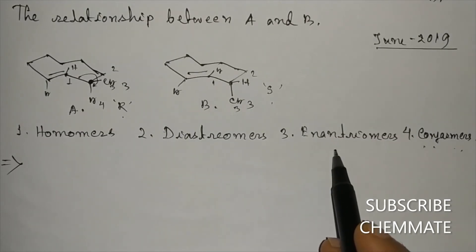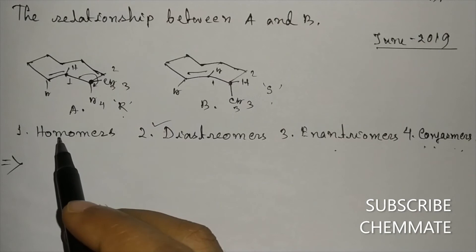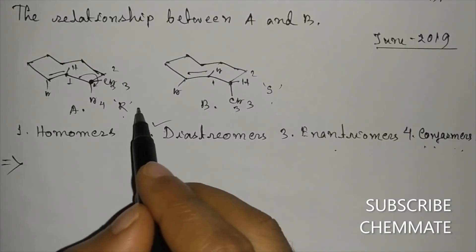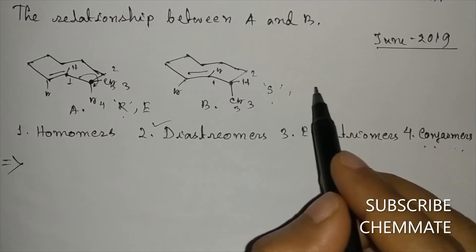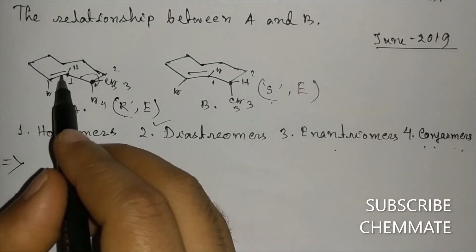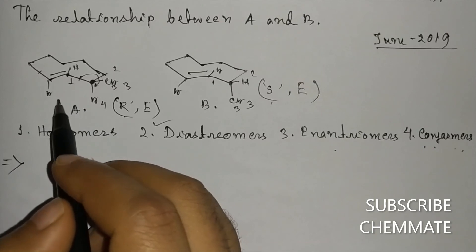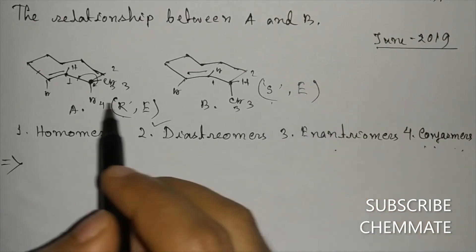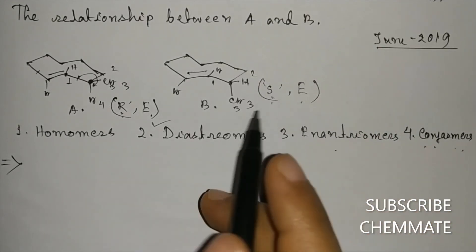So the only option is diastereomers. These two are diastereomers. It has configuration E,R,E and it has configuration S,E. This is E because these two groups are in opposite sides, so this double bond has E configuration as well as this double bond also has E configuration. So the molecule has R,E configuration and this molecule has S,E configuration. These two are diastereomers.